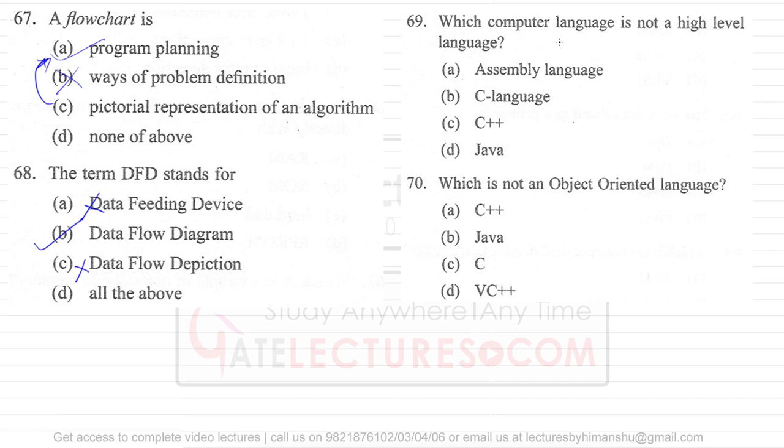Now 69 is saying which computer language is not a high level language. Now we have four languages here, assembly language, C language, C plus language and Java. Now C, C plus language and Java, they are considered as high level programming language as assembly language is not a high level programming language here.